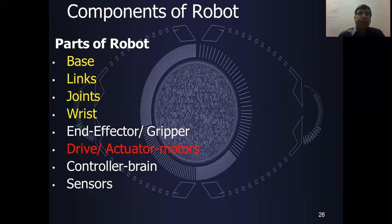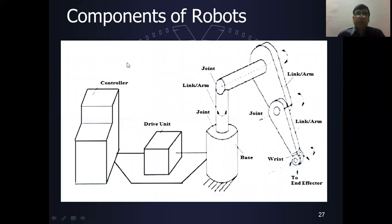The main parts of a robot include the base, links, joints, wrist, manipulator, end effector, and gripper. Other components are the drive or actuators, the controller — which is the brain of the robot — and sensors. In the schematic diagram, the controller is connected to the drive unit and base. The base connects to link arms through joints, and at the end the wrist and end effector are mounted.